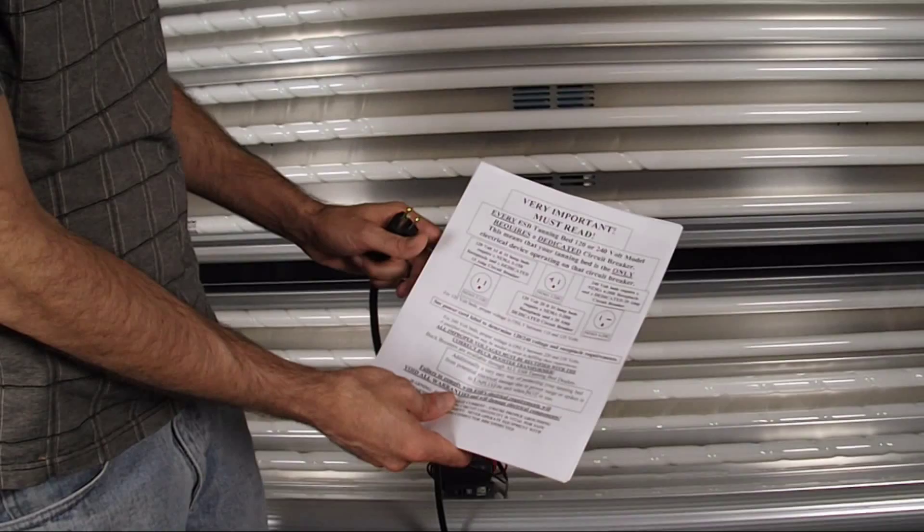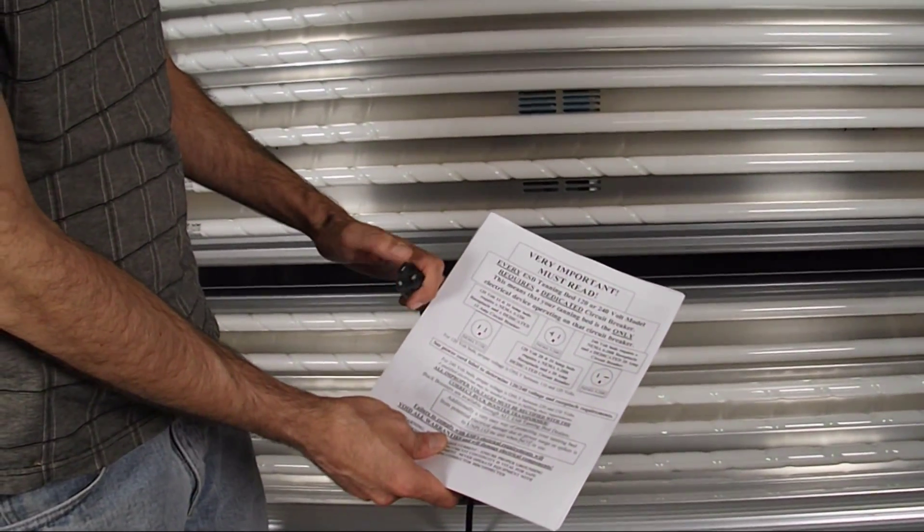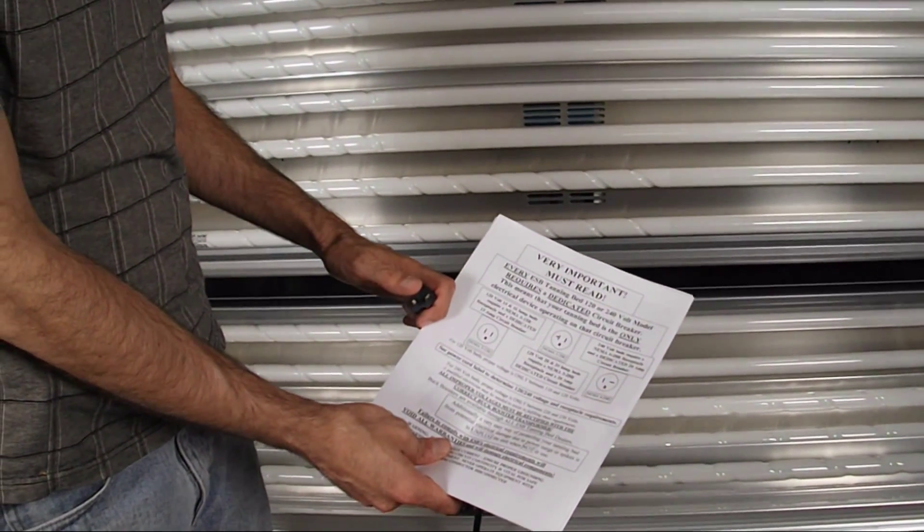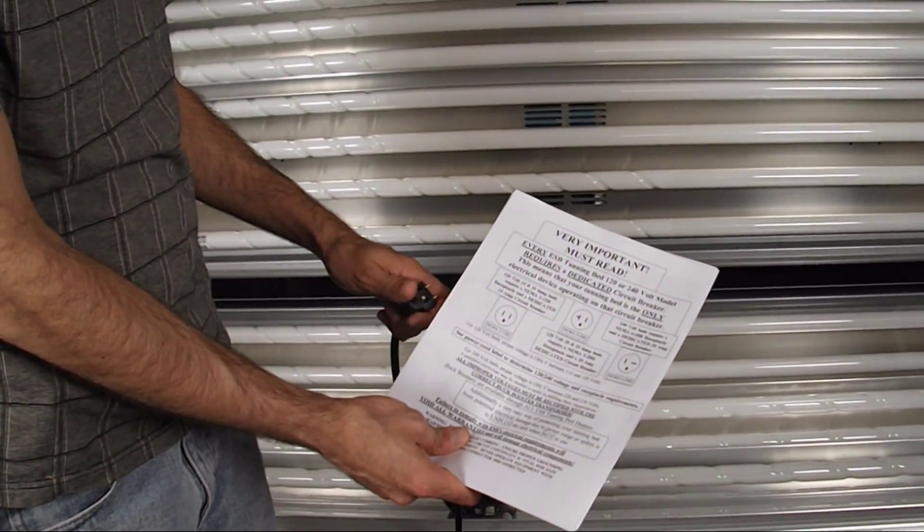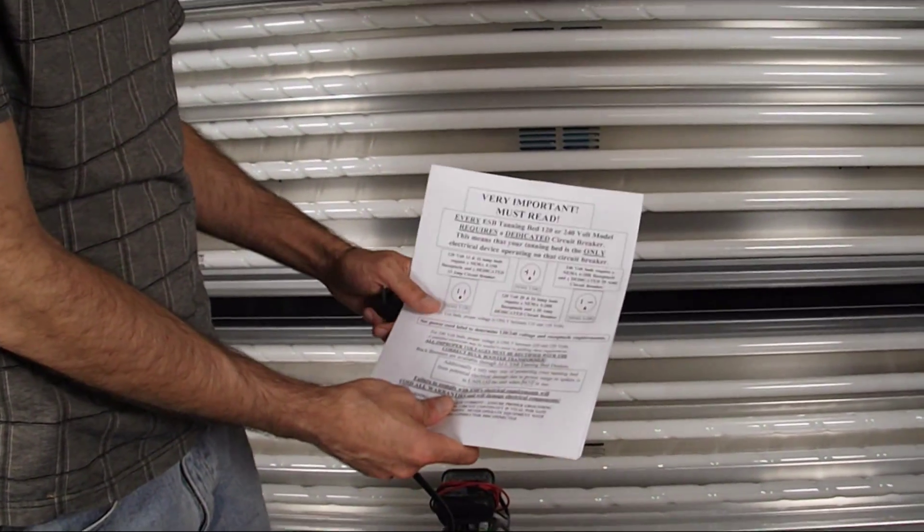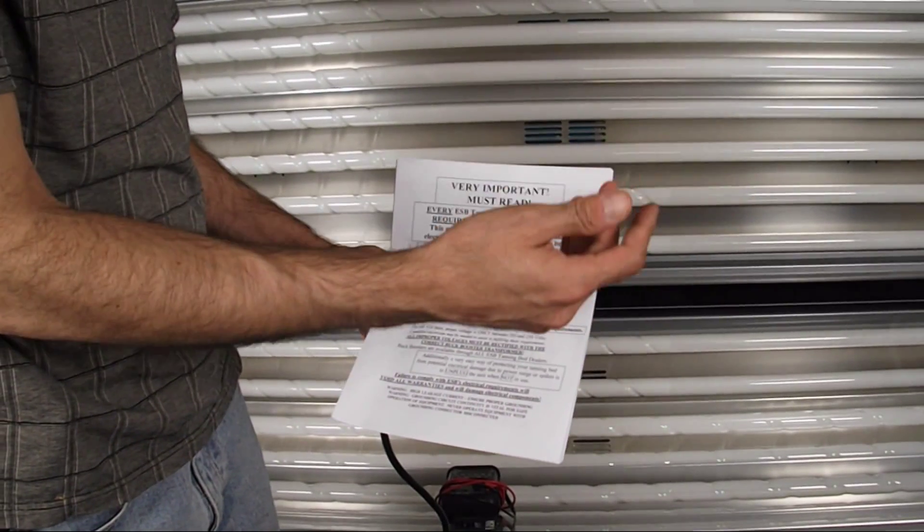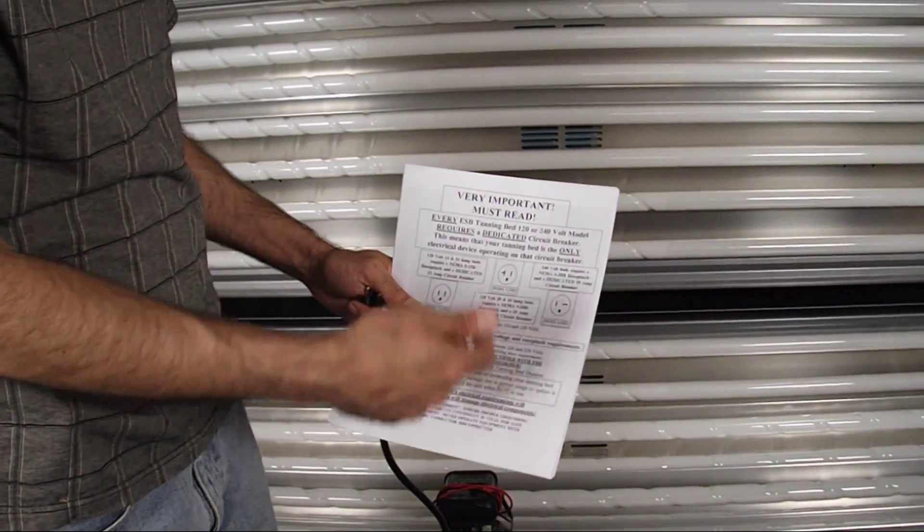There are many older models that might have had a 15 amp plug like this, but they would still require a 20 amp circuit breaker. This is because of the inrush. When you first turn the tanning bed on, you would basically need a little bit more clearance, a little more tolerance in that breaker to prevent it from tripping when you start the bed up.